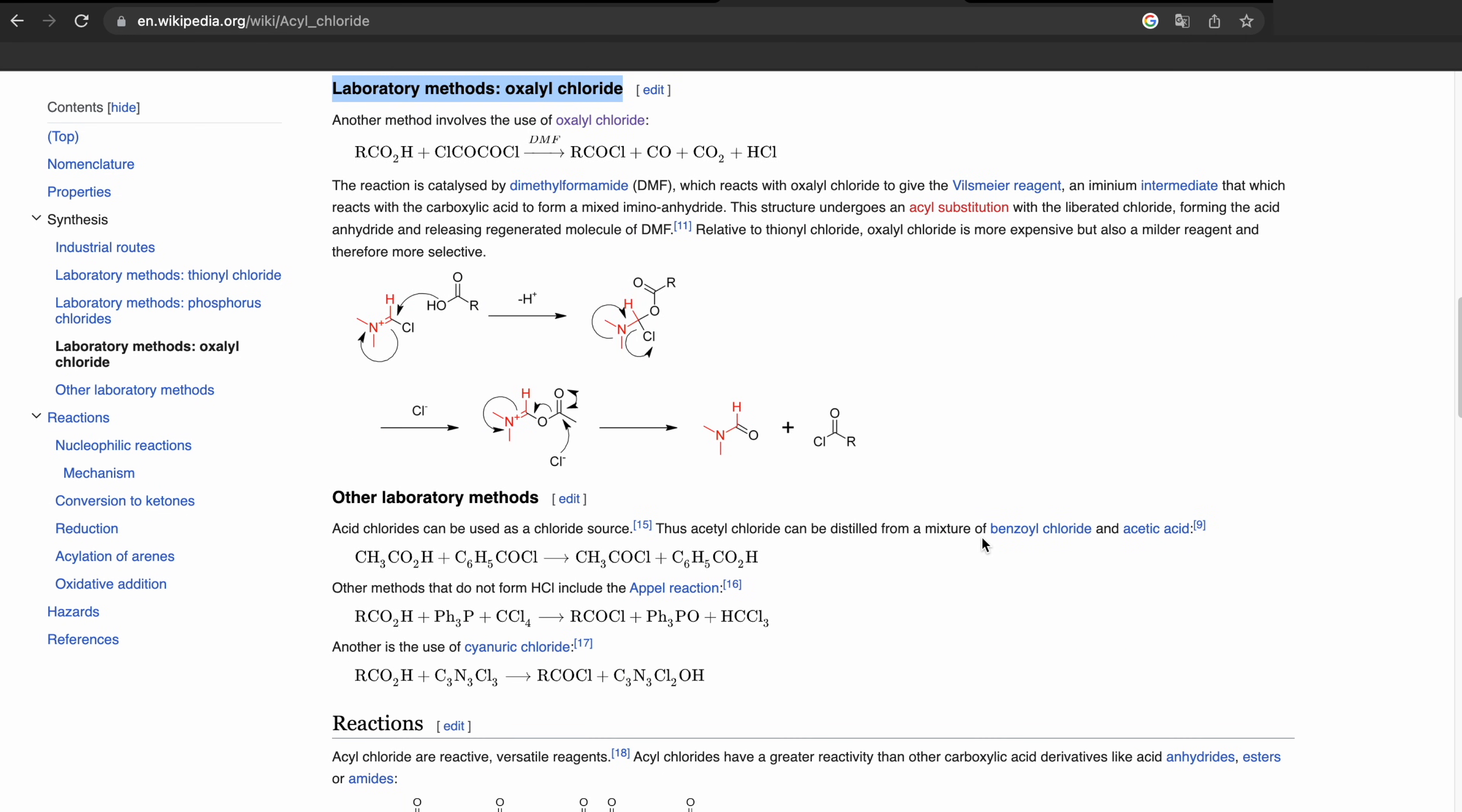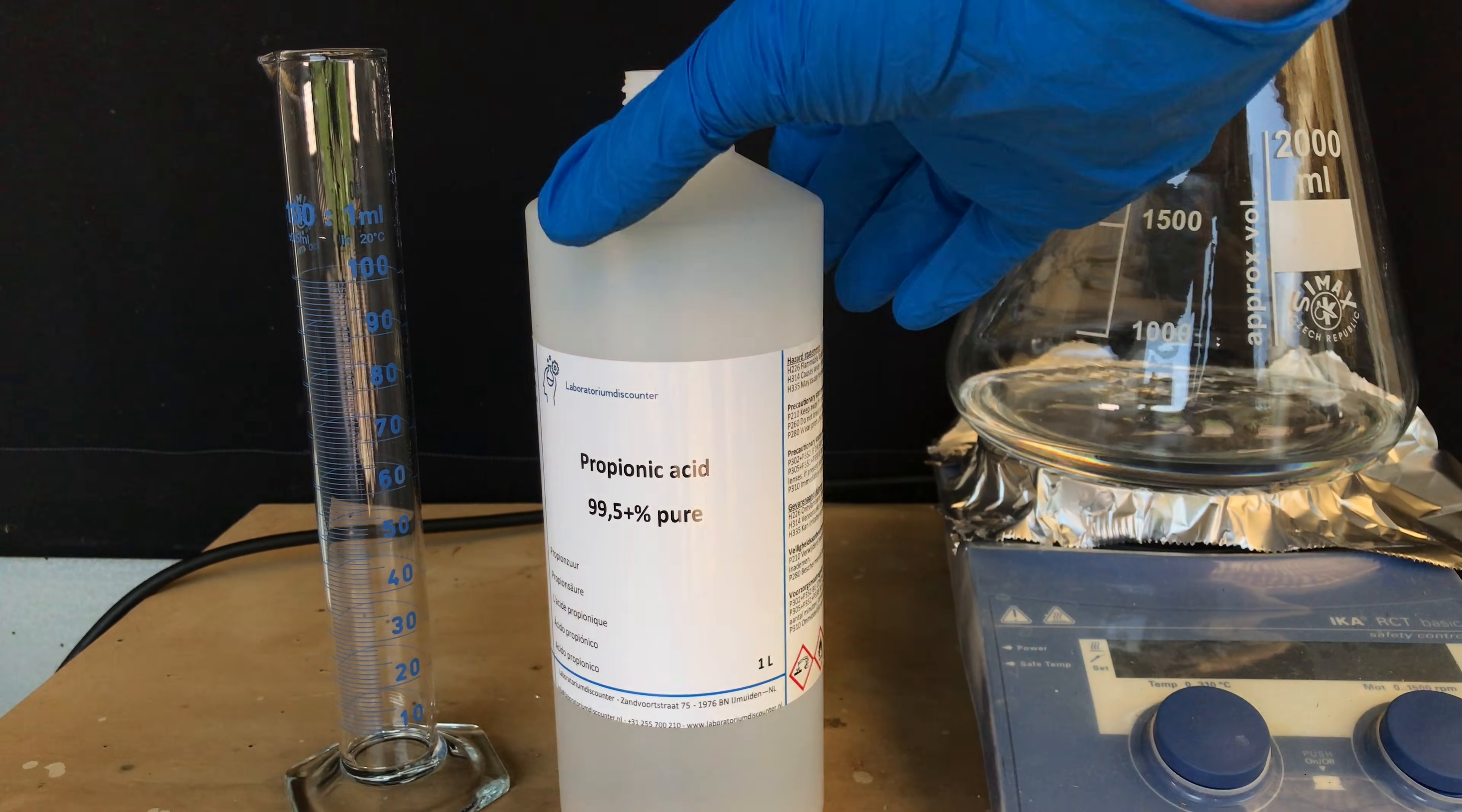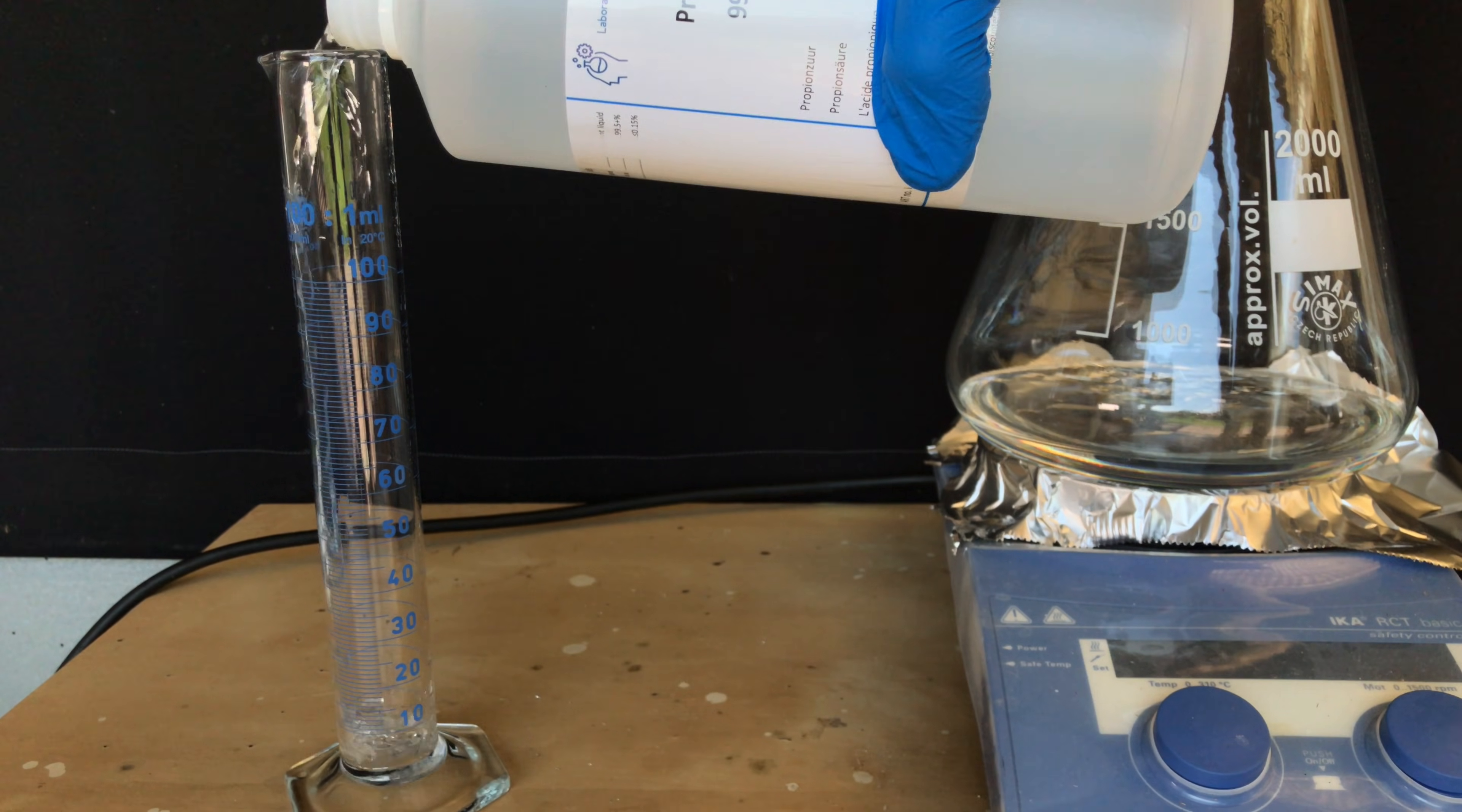These routes can be used for most carboxylic acids. Benzoyl chloride cannot be used for most carboxylic acids. When using benzoyl chloride it is important that the resulting carboxylic acid chloride is a somewhat slow boiling liquid.